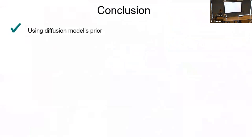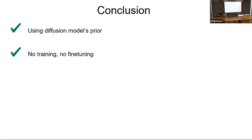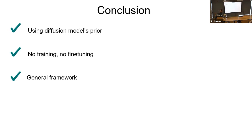To conclude, I presented a work suggesting how to use the prior learned by the diffusion model. It requires no training, no fine-tuning, and is very easy to use — you don't have the overhead of finding a dataset and pre-training everything. Our paper proposes a general framework that allows novice users to decide what they want and how to control the generated image. For future work, we think it can be applied to video editing or 3D generation by sampling based on the prior of a 2D diffusion model.